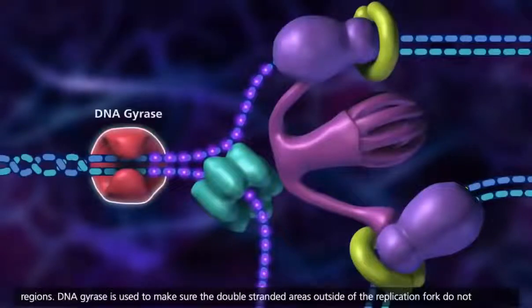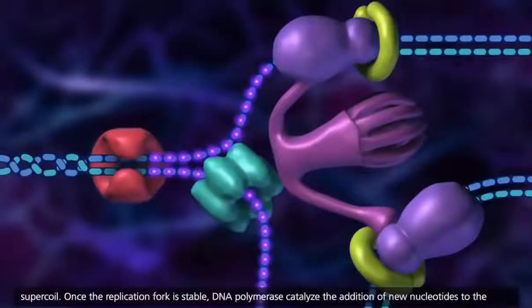DNA gyrase is used to make sure the double-stranded areas outside of the replication fork do not supercoil.